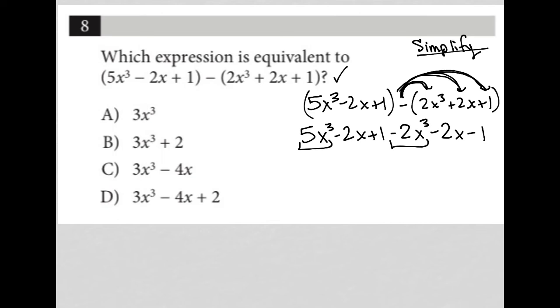So 5x cubed minus 2x cubed is 3x cubed. Negative 2x minus 2x is negative 4x. And positive 1 minus 1 is 0.